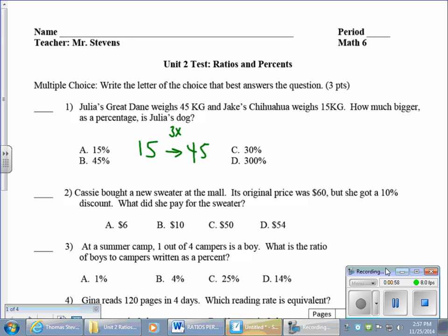So one time bigger would be 100 percent. Hang on. All right, sorry about that. 100 percent would be 15, so 300 percent is 45. The answer is D, 300 percent.